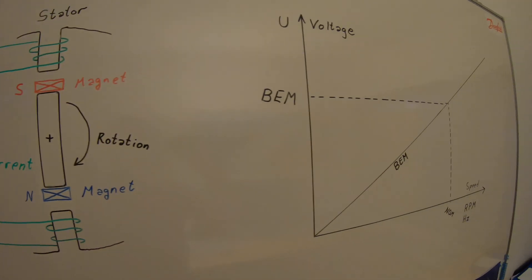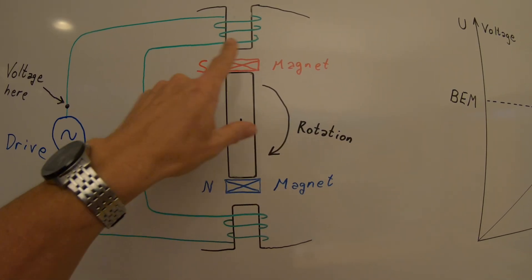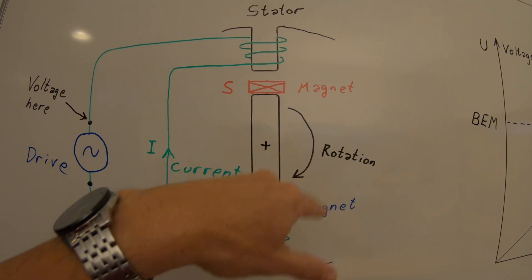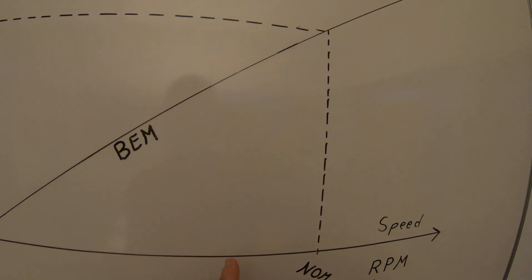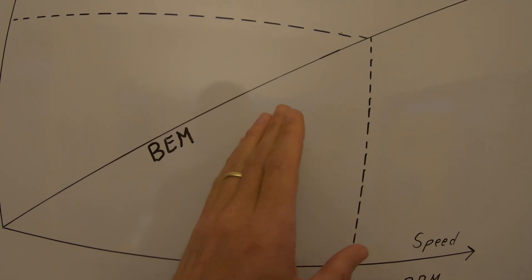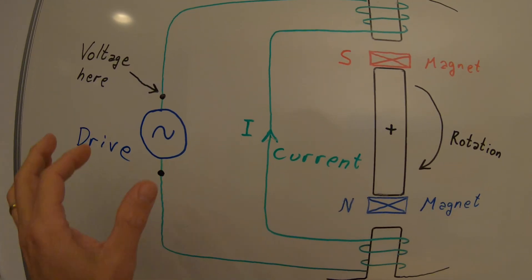What then about the back EMF? It means that if I want to spin the ship propeller let's say at 500 RPM, 500 RPM it means that the motor itself produces some voltage. So for me to be able to control